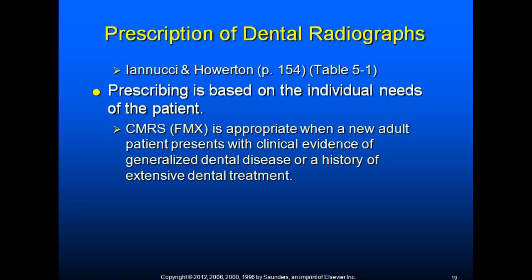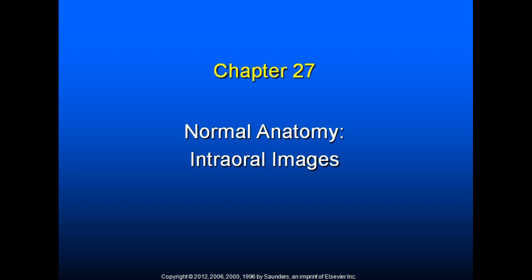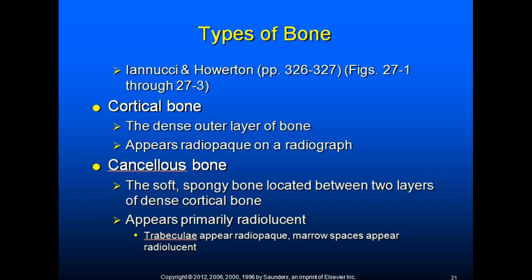Normal anatomy — intraoral images. Cortical bone, also referred to as compact bone, is the dense outer layer of bone that appears radiopaque on a radiograph. Cancellous bone is the soft, spongy bone located between two layers of dense cortical bone. It appears primarily radiolucent with trabeculae that appear radiopaque and marrow spaces which appear radiolucent.